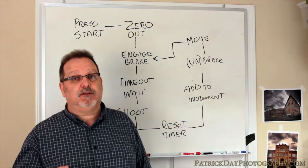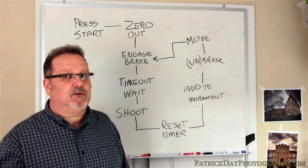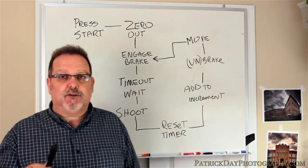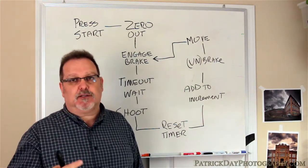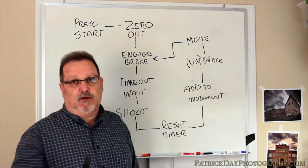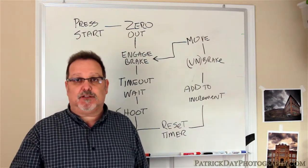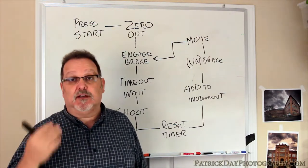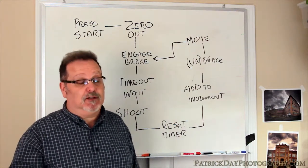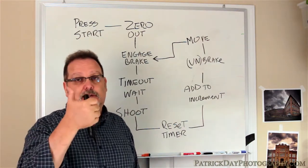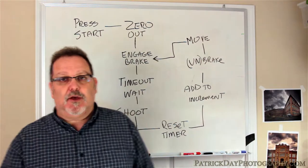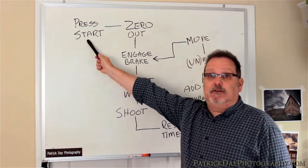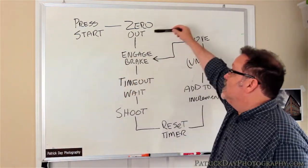So, now, let's go into the meat and potatoes of how this is going to work. We're going to assume that in this process, we've already got the object sitting on the table, the lights are set, the camera is set, and we've done some test shots, make sure everything's good to go. We're ready to press the button. So, the first thing we do, of course, is press start. Once we do that, we need to have the table zero out.